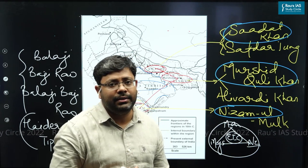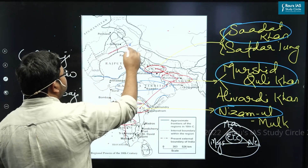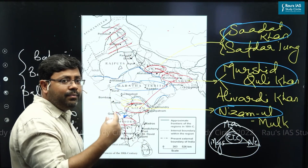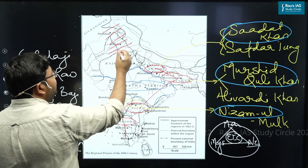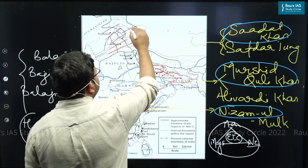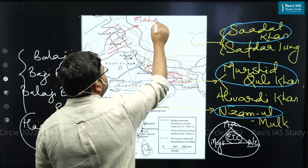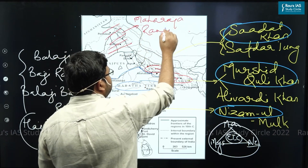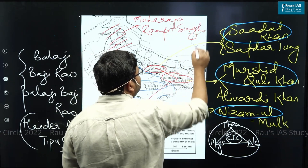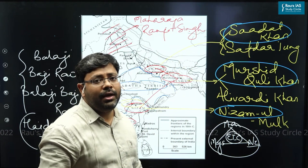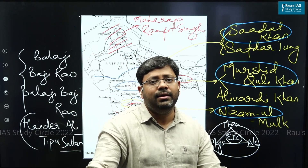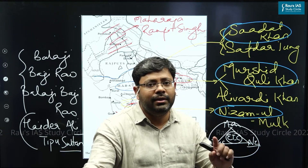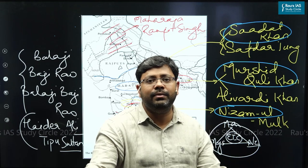Another regional power that became very prominent by the end of the 18th century and remained prominent almost till the middle of the 19th century was the powerful Sikh Kingdom of Punjab, comprising Punjab in India, Pakistan, and parts of Kashmir. This became very prominent under the rule of Maharaja Ranjit Singh, an excellent military commander. It is said he created an army so powerful it was considered the second best army in Asia, with the best army still being that of the East India Company.